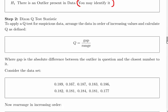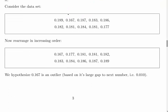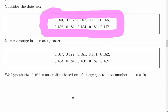The second step is the test statistic: gap over range. The range is the maximum minus the minimum. The gap is the absolute difference between the outlier in question and the closest number to it. This is our data set here, but we must put it in ascending order - the minimum, then the next lowest value, and so on all the way up to the maximum.